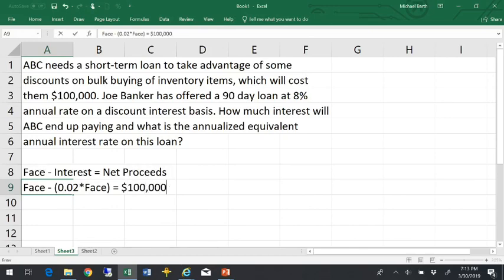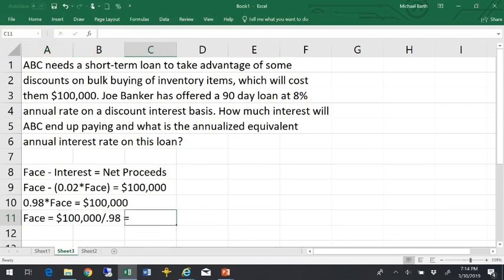So if they need net proceeds of $100,000, they're going to have to borrow more than $100,000 to actually get $100,000 in cash. So the face amount minus 2% of the face amount equals $100,000. That means that 98% of the face amount would be equal to $100,000. And that means that if I divide those sides by 0.98, the face would be equal to the net proceeds divided by 1 minus the interest rate or 0.98.